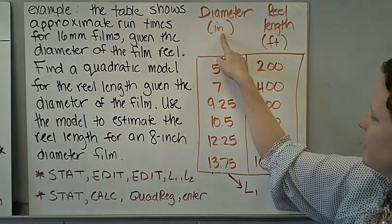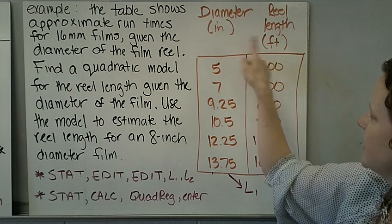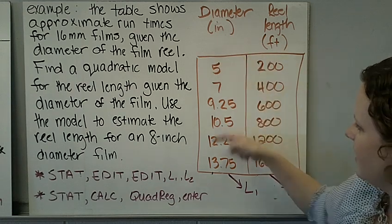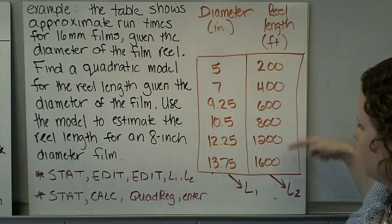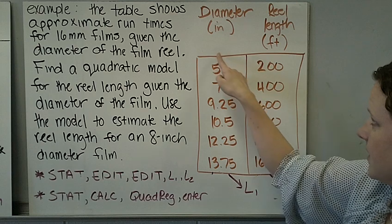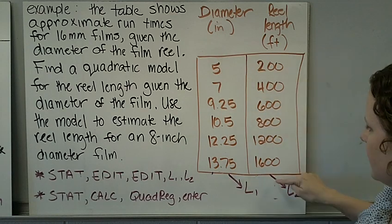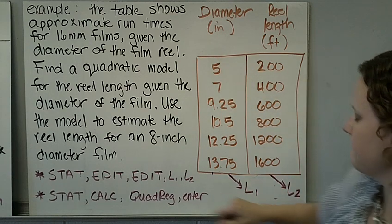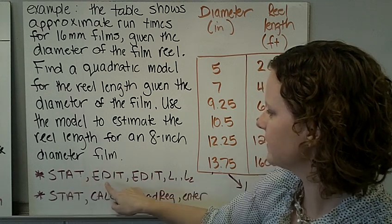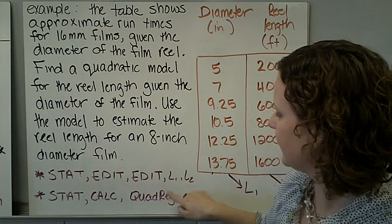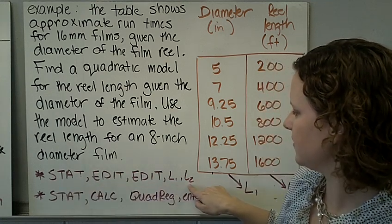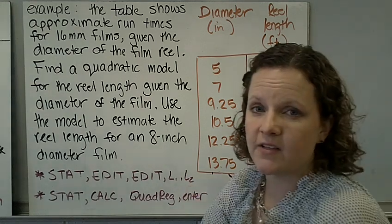So here is our data. I have the diameter of the reel and the reel length. Diameter is in inches, the reel length is in feet. All of those values and all of these values. The first column goes in L1, the second column goes in L2. At this point you're going to put STAT, EDIT, EDIT, and fill in your L1 and L2.